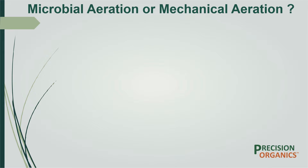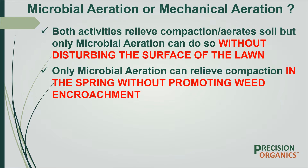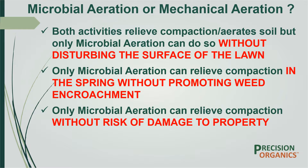Let's compare microbial aeration to mechanical aeration. Both activities relieve soil compaction, but microbial aeration does so without disturbing the surface of the lawn, and we believe this is a significant development for the professional lawn care industry. Only microbial aeration can relieve compaction in the spring without disturbing your pre-emergent barrier and without encouraging broadleaf weed germination. With microbial aeration, there is no risk of damaging irrigation heads, dog fences, gates, or other structures on your property.